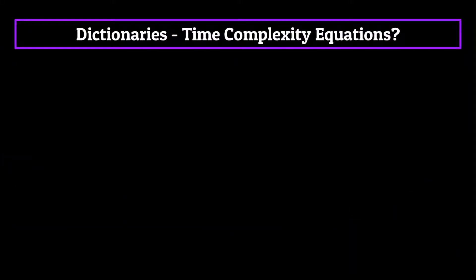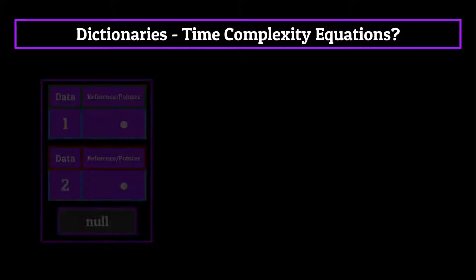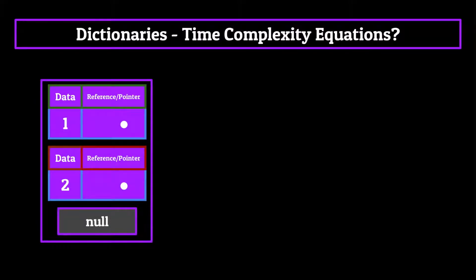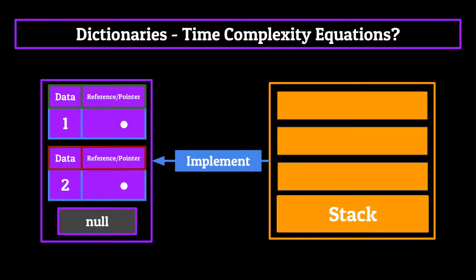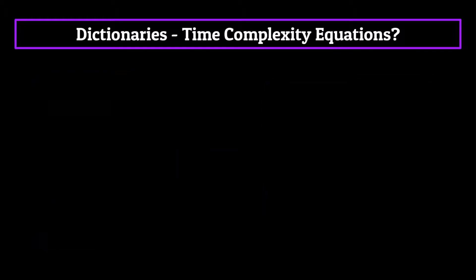Alright, now that we know what dictionaries are and how they work a little bit, let's jump into the time complexity equations for a dictionary, or at least try to. Let me explain. Now for a dictionary, the time complexity equations are a little bit funky. Previously, we talked about linked lists and how they are sometimes used as the backing of other data structures. For example, a stack might implement the linked list structure as its way of storing information in memory.